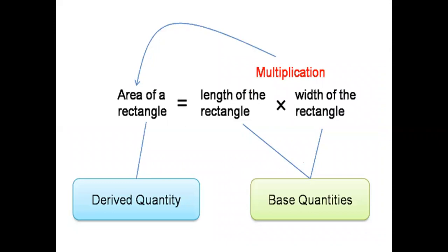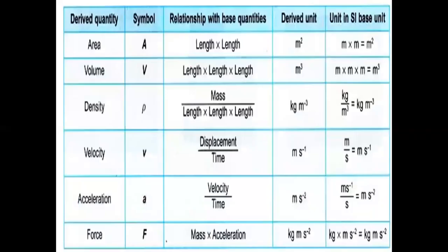Here you can also see clearly that area of a rectangle is a derived quantity, because it depends upon the length and width of the rectangle, which are base or fundamental quantities. Besides area, volume, density, velocity, acceleration, and force are all also derived quantities, because they depend upon two or more fundamental quantities, or a power of a fundamental quantity.